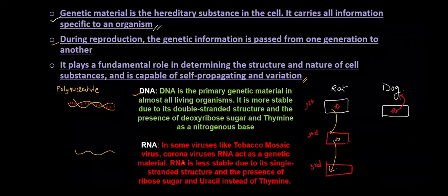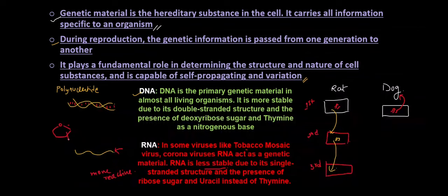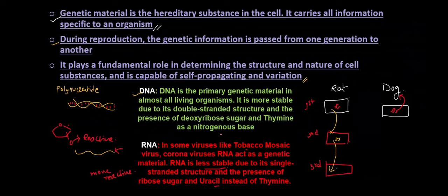In some viruses like tobacco mosaic virus and coronavirus, RNA acts as the genetic material. RNA is less stable — meaning RNA is more reactive. RNA is more reactive due to the single strand, the presence of ribose sugar, and uracil. The 2' oxygen in ribose sugar is very very reactive, and because of that RNA is very reactive compared to DNA, which lacks that oxygen. Also, uracil is more reactive than thymine — that is another reason why RNA is more reactive than DNA.